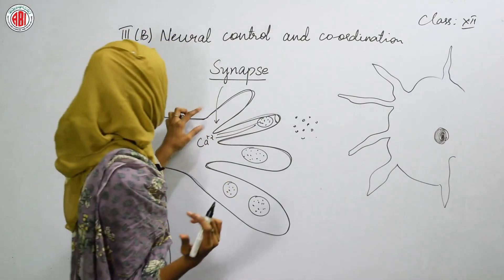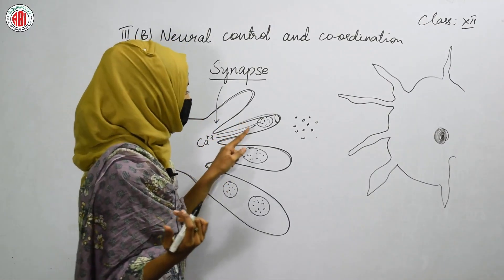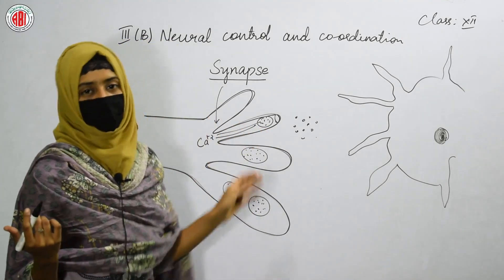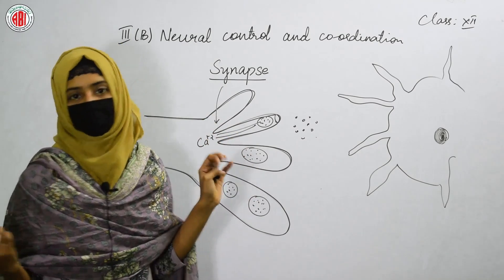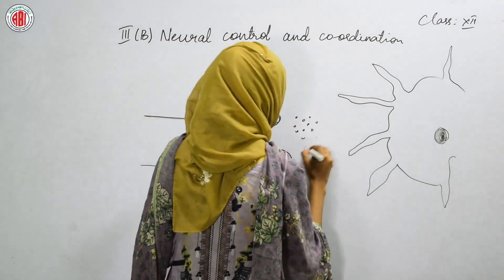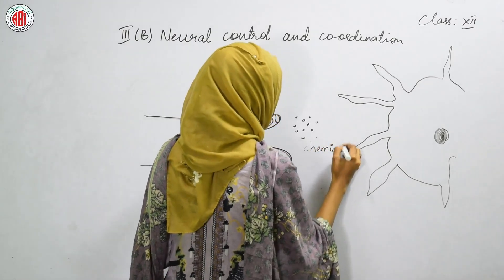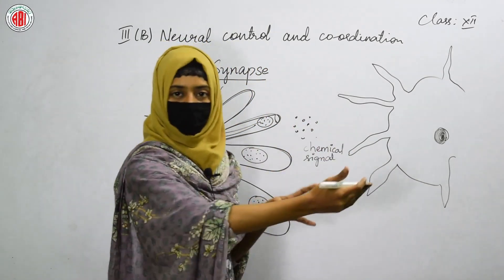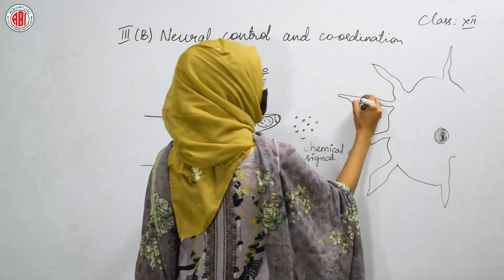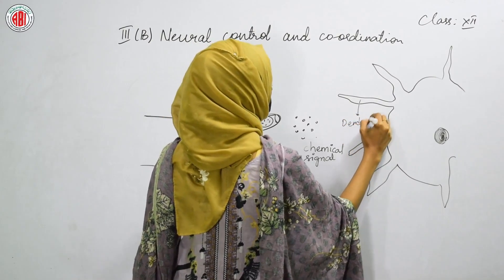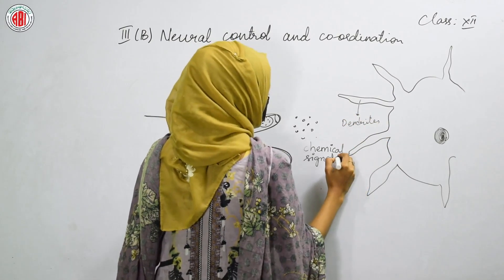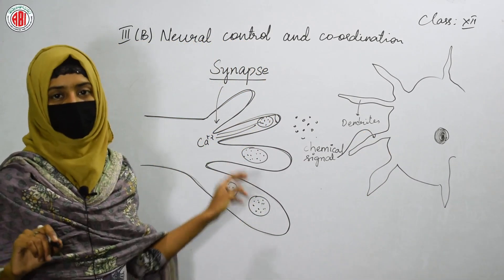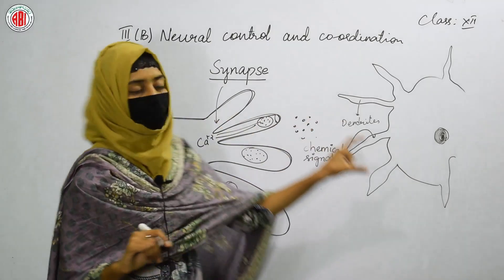After calcium enters into the axon terminals, it stimulates the release of neurotransmitter. Once the neurotransmitter comes out of the axon terminals, this chemical signal can be transmitted to another neuron — to the dendrites of another neuron. These are the dendrites of another neuron and this chemical signal can be received by the dendrites. In this way, the synapse is a connection between the two nerve cells.